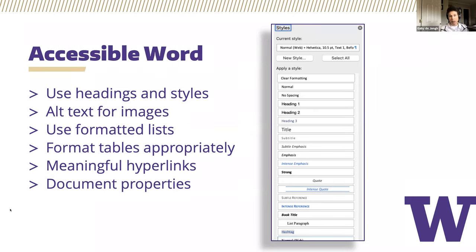For tables, by default, assistive technology will read a table from left to right starting at the top. And if the relationship between the cells is not defined, then the table is not formatted correctly. If heading cells aren't associated with data cells, a user can quickly get lost in a sea of data. When including a table in your document, be sure to use the table tools editor to identify headers within your table, as this helps screen readers and assistive technology announce the table data in a more meaningful way.